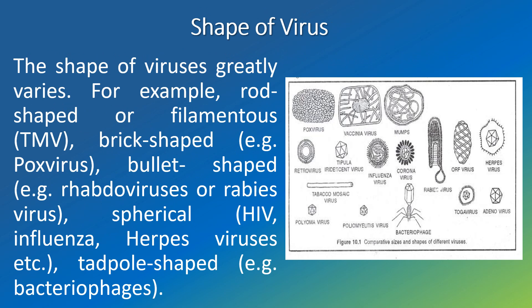Shape of virus: the shape of viruses greatly varies. For example, rod-shaped or filamentous — example is tobacco mosaic virus. Brick-shaped — example is pox virus. Bullet-shaped — example is rhabdovirus or rabies virus. Spherical shape — examples include HIV virus, influenza, and herpes virus. Tadpole shape — example is bacteriophage.